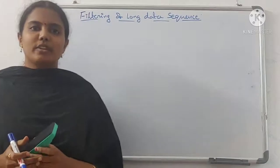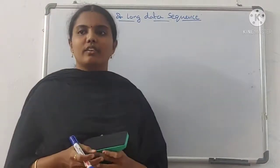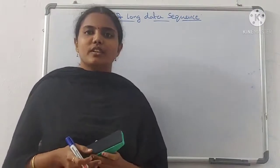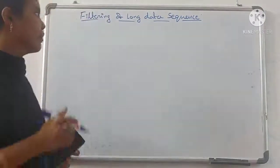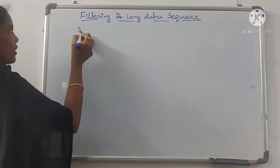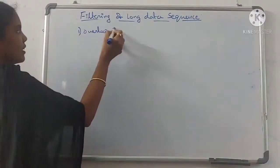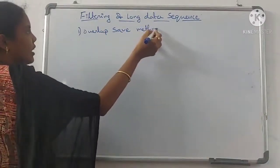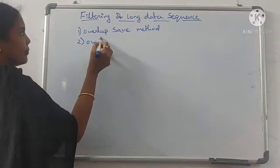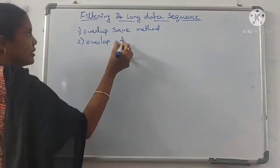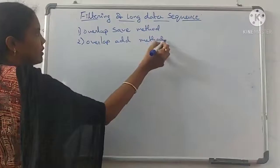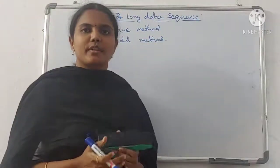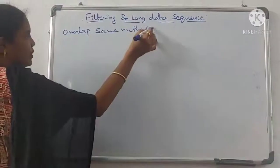I'm going to explain about filtering long data sequences. There are two different methods that are commonly used for filtering: one is the overlap save method, and the second one is the overlap add method. First, we will look at the overlap save method.